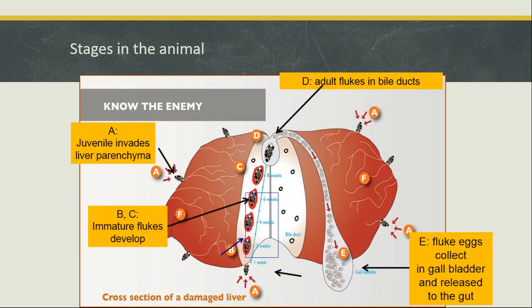Unlike barber's pole or black scour worm in sheep, where eggs are deposited straight out into the digesta, with liver fluke the eggs are deposited into the gallbladder, forming a reservoir of eggs. As bile gets excreted out into the small intestine, that's when the eggs get shed. We'll talk about this more when we discuss diagnostics and how to determine whether your animals have got liver fluke.